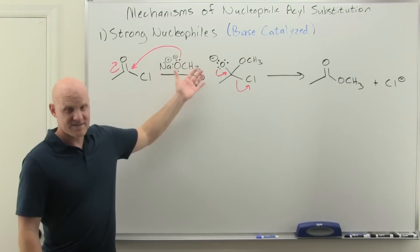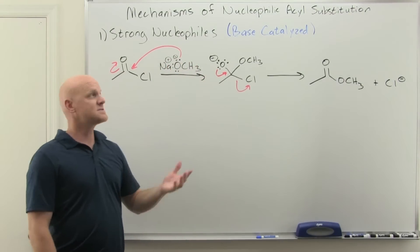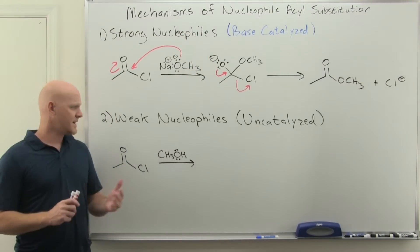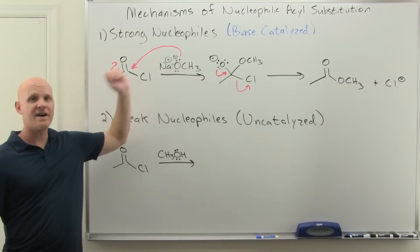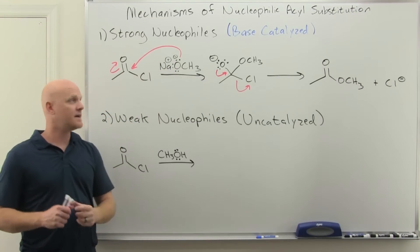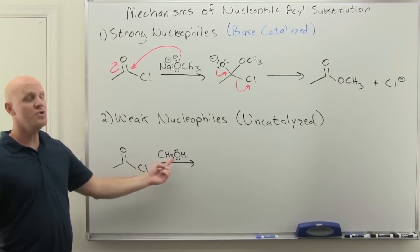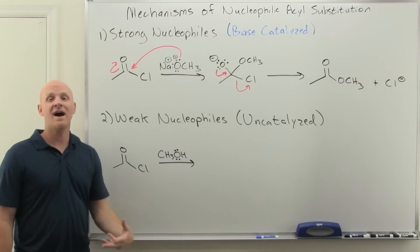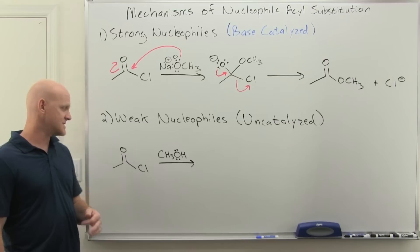So again, this is the easiest of the mechanisms. This is the base catalyzed. Let's take a look at the uncatalyzed mechanism as well. All right, so here instead of using the alkoxide ion, an anion being a strong nucleophile here, I've got the neutral nucleophile in methanol. And again with an acid chloride or an acid anhydride, you don't actually have to catalyze this.